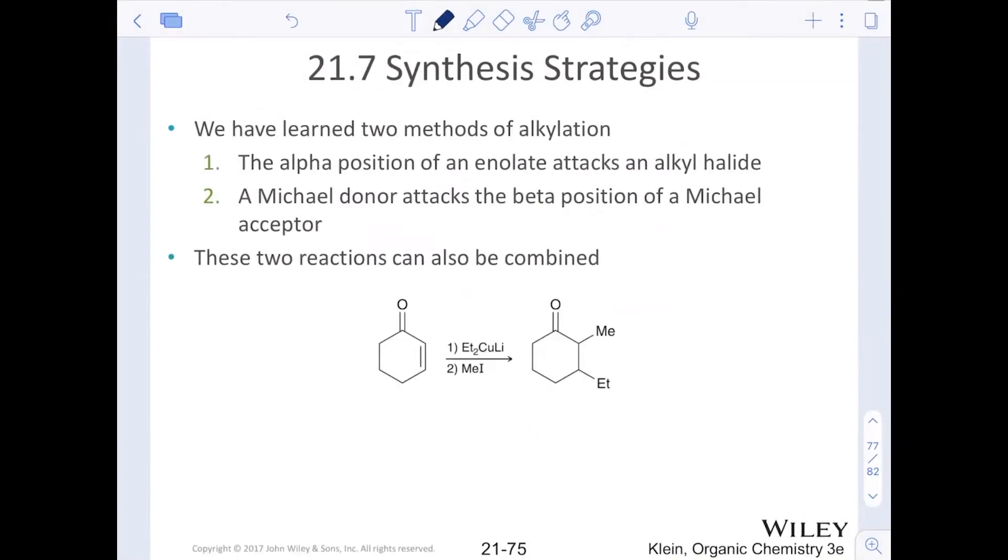We have learned two methods of alkylation: the alpha position of enolates being attacked by doing an SN2 reaction with an alkyl halide, or the Michael donor attacks the beta position of a Michael acceptor.